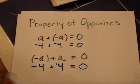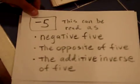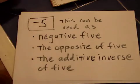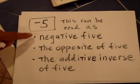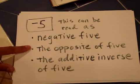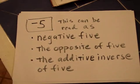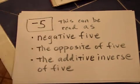Negative numbers can be read in a couple of different ways. For instance, negative 5 could be read as 'negative 5,' or as 'the opposite of 5,' or as 'the additive inverse of 5.' All of these names refer to the same number.